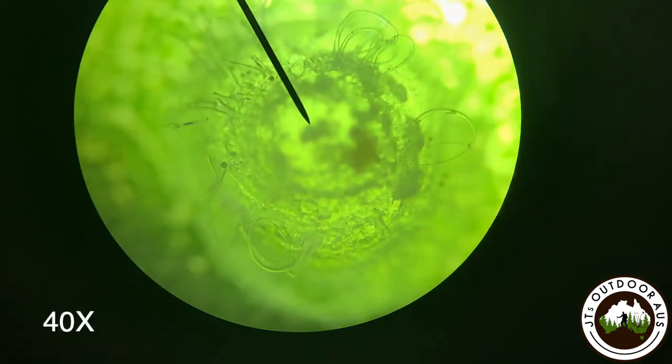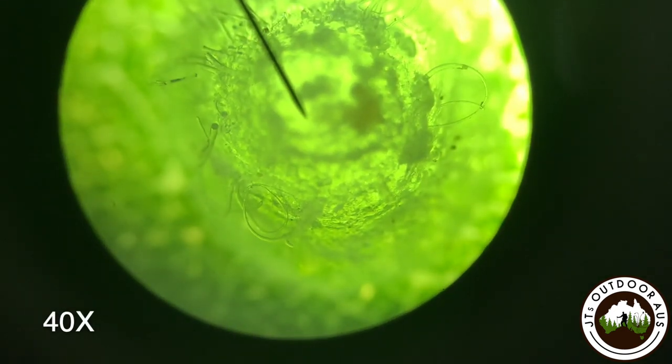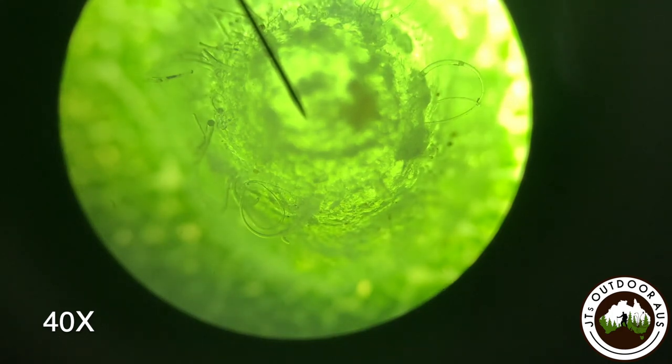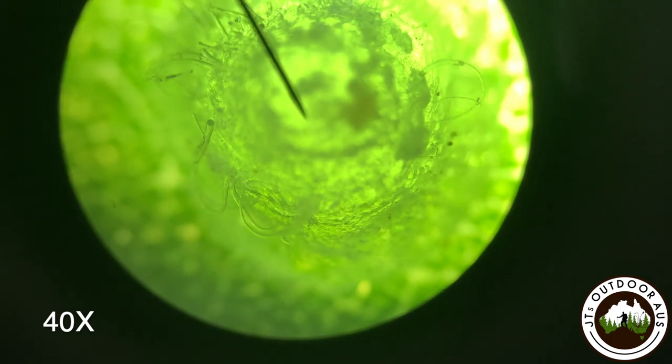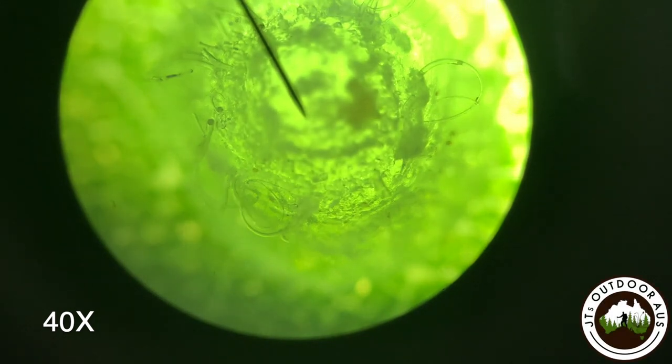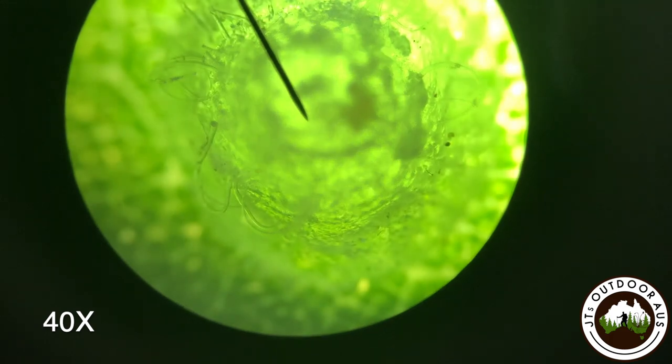Now unfortunately this microscope is designed for really thin slices, like onion and stuff that you do in year seven science, but what we can find is these super intricate sugar structures and if I adjust the focus we can actually focus down the structure and back up to the top. I think that's pretty cool.